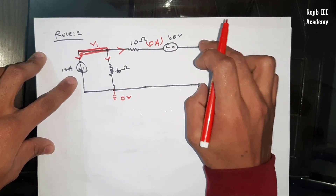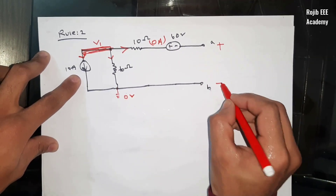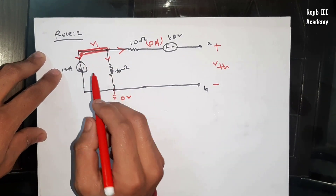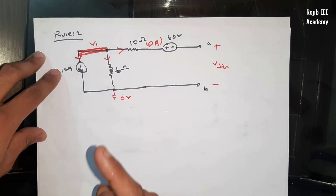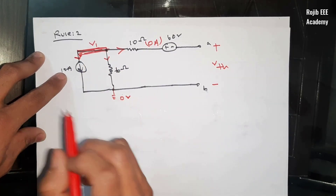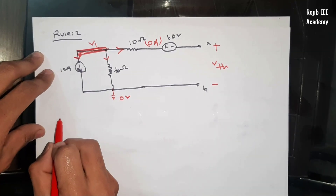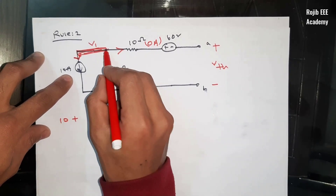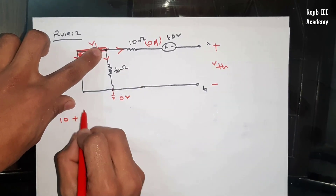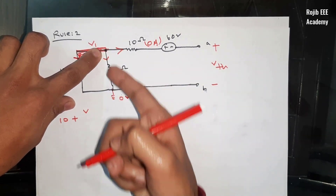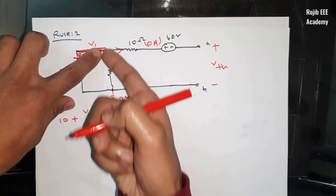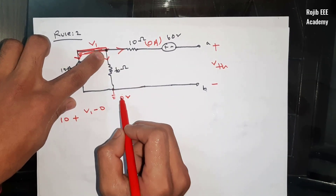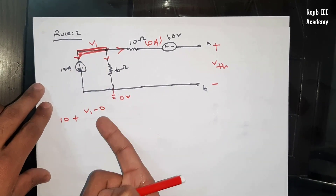We have removed the load resistance to find VTH. The sum of outgoing currents at node V1 equals zero. Incoming current is 10 Ampere plus the current through the 6Ω branch. Using i = V/R, the current through 6Ω is V1 minus 0 divided by 6. Setting the KCL equation: 10 plus V1/6 equals 0, so V1 is equal to minus 60V.